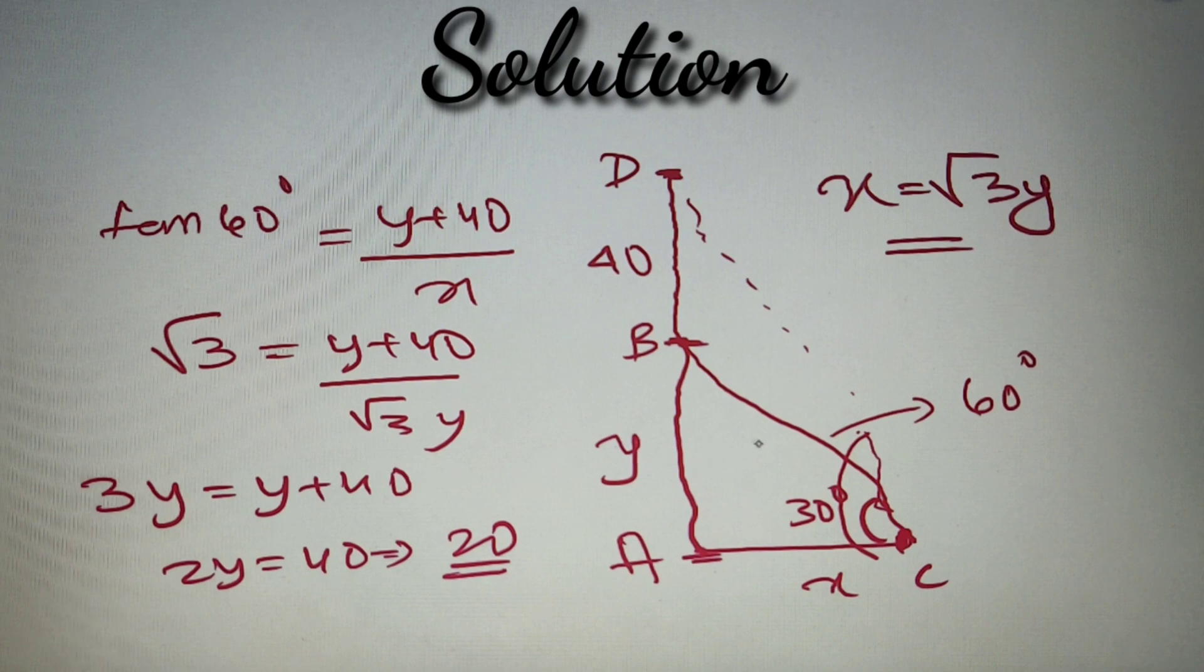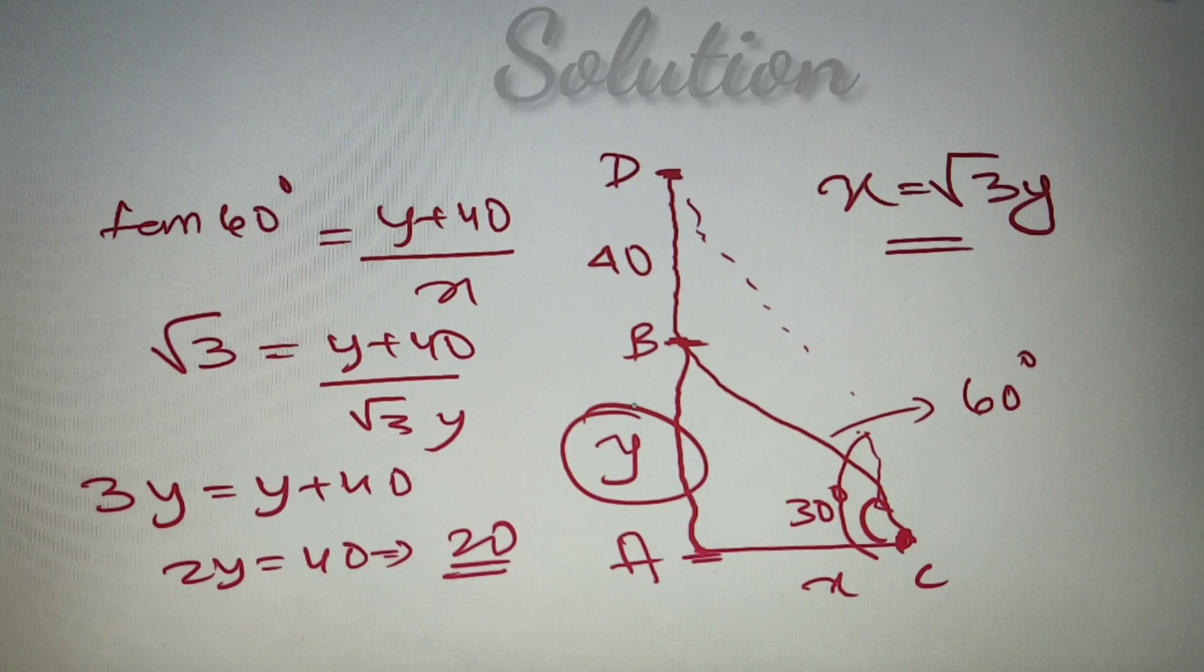So according to the given question, we have to find the value of y, that is the length of the school building. So we have got y as 20 meters. And according to the given question, it is option number C. The final answer is option number C, 20 meters.